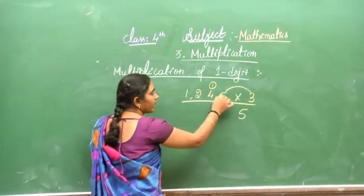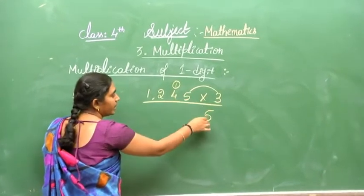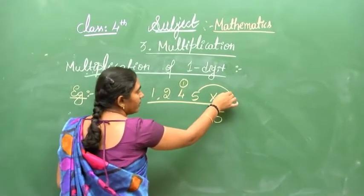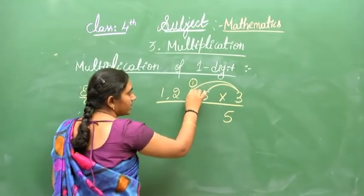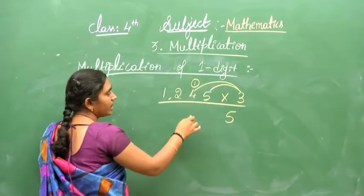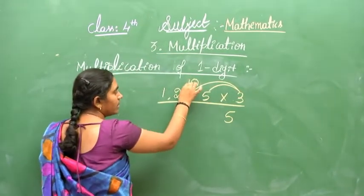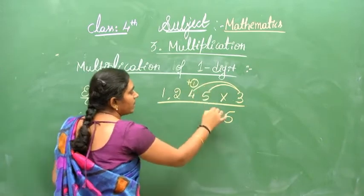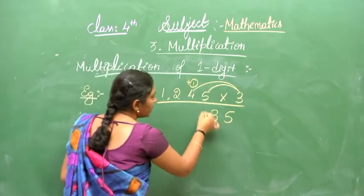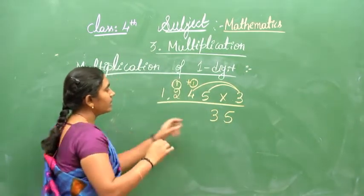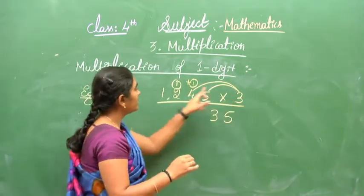3 times 5 is 15 — write 5, carry 1. Then 3 times 4 is 12, plus 1 carry is 13 — write 3, carry 1.